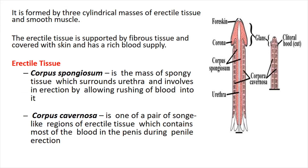There are two erectile tissues. First is the corpus spongiosum and second is the corpus cavernosa. The corpus spongiosum is the mass of spongy tissue that surrounds the urethra; it causes erection by allowing blood to rush into it. The corpus cavernosa is a pair of spongy-like regions of erectile tissue that contain most of the blood in the penis during penile erection.